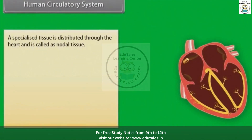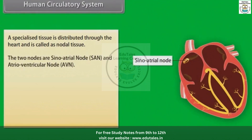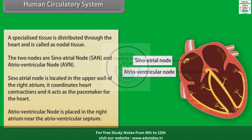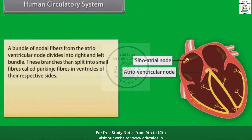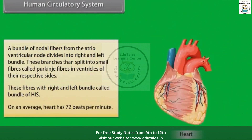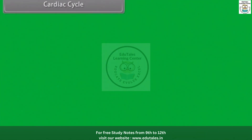The wall of the heart is made up of cardiac muscles. A specialized tissue distributed through the heart is called nodal tissue. The two nodes are the sino-atrial node and the atrioventricular node. The sino-atrial node is located in the upper wall of the right atrium; it coordinates heart contractions and acts as the pacemaker for the heart. The atrioventricular node is present in the right atrium near the atrioventricular septum. A bundle of nodal fibers from the AV node divides into right and left bundles, which split into small fibers called Purkinje fibers in the ventricles. These fibers along with the right and left bundles are called the bundle of His. On average, the heart has 72 beats per minute.